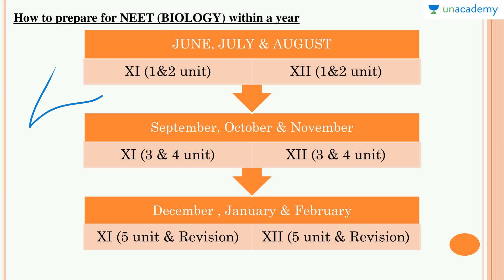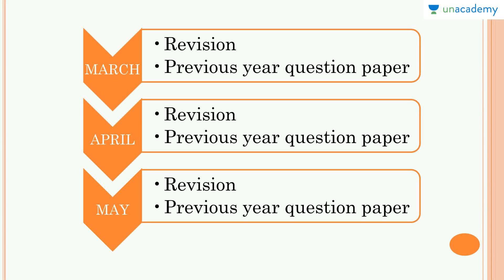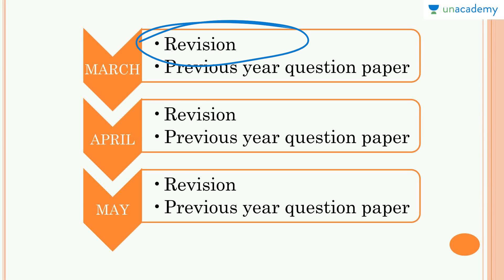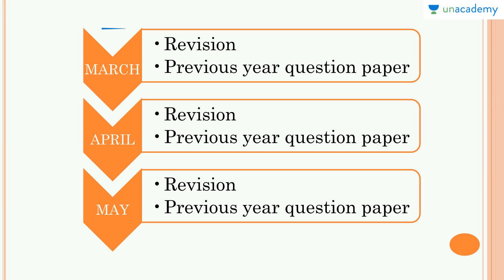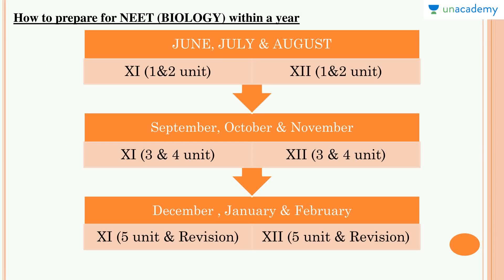In March, April, and May — the final 3 months — do as much revision as possible along with previous year question papers and MCQs related to all units. Even if the exam is in the first week of May, you still get about 2 months for revision and practice. Try to do these things for physics and chemistry as well. With this systematic study plan you will do very well and definitely get a seat in your medical entrance. Thank you.